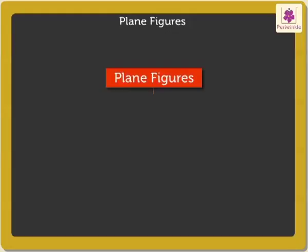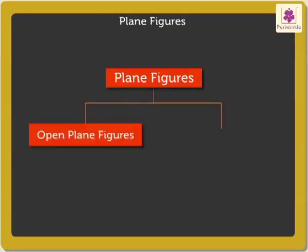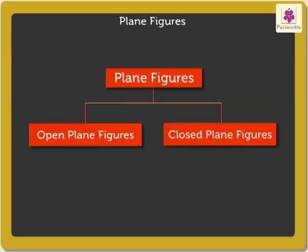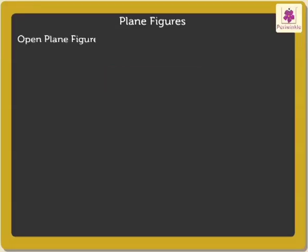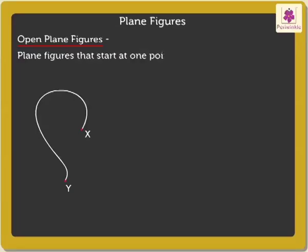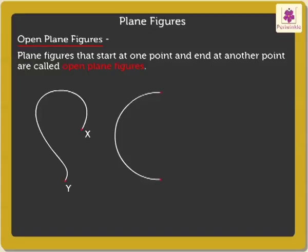Plane figures are of two types, open plane figures and closed plane figures. Let's study both types. Let's begin with open plane figures. Look at this curvy line. It begins at a point X and ends at another point Y. Plane figures that start at one point and end at another point are called open plane figures. Curves are open plane figures.